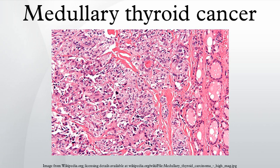Mutations in the RET proto-oncogene, located on chromosome 10, led to the expression of a mutated receptor tyrosine kinase protein, termed RET. RET is involved in the regulation of cell growth and development, and its germline mutation is responsible for nearly all cases of hereditary or familial medullary thyroid carcinoma. Its germline mutation may also be responsible for the development of hyperparathyroidism and pheochromocytoma. Hereditary medullary thyroid cancer is inherited as an autosomal dominant trait, meaning that each child of an affected parent has a 50% probability of inheriting the mutant RET proto-oncogene from the affected parent.